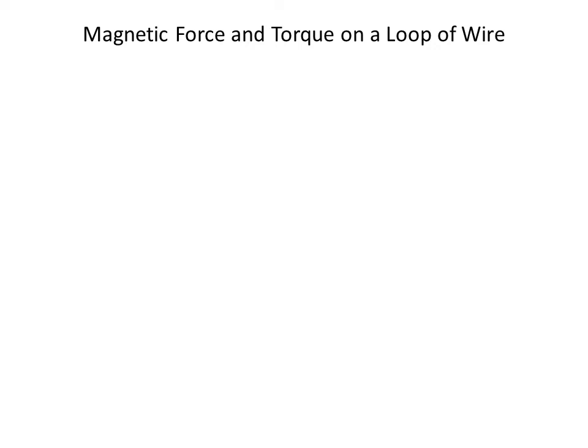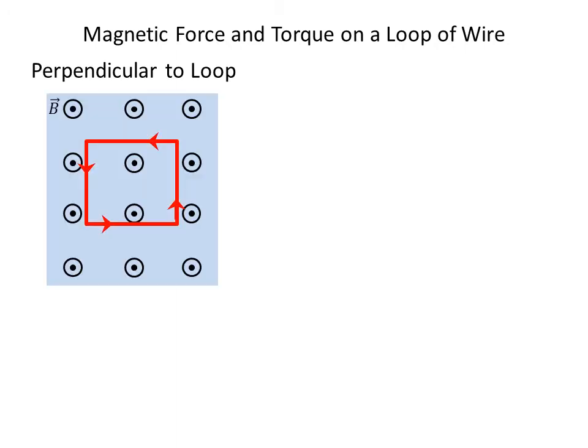Let's look at the magnetic force and torque on a loop of wire. We'll make the magnetic field first perpendicular to the loop.